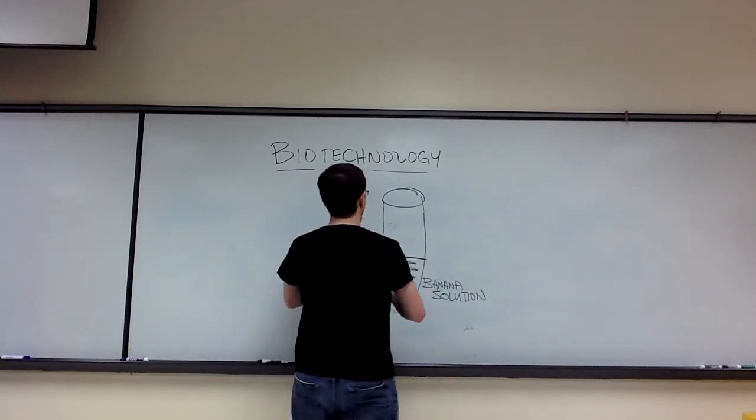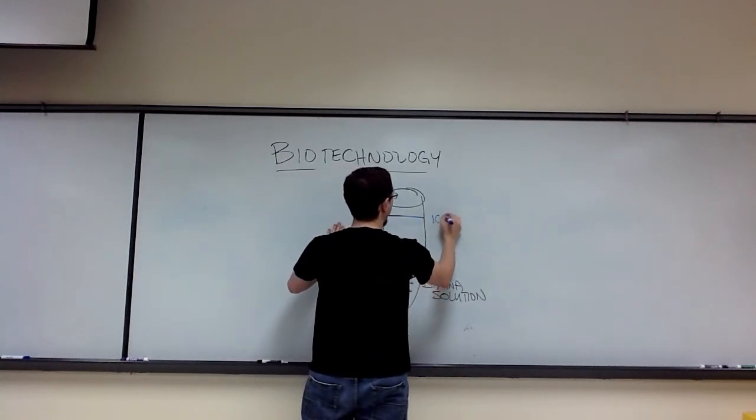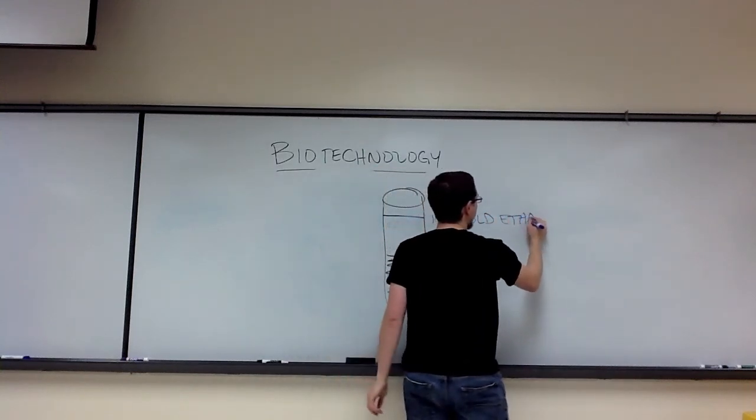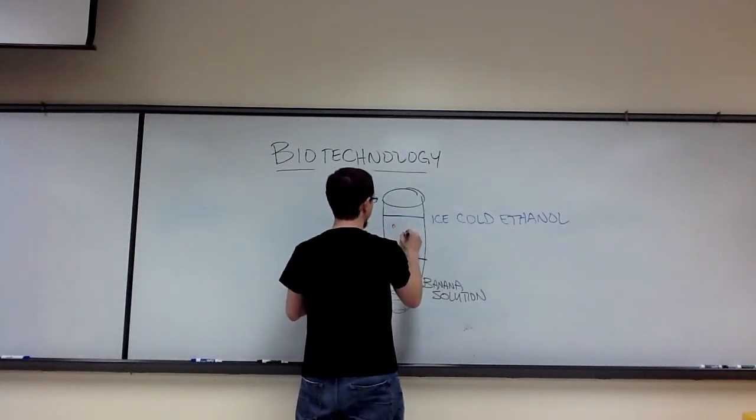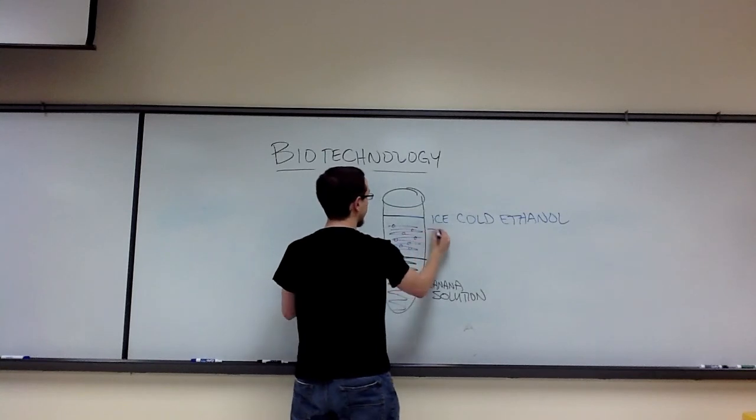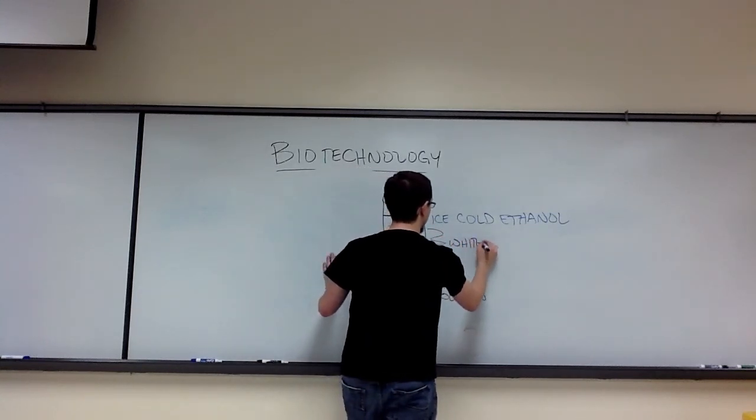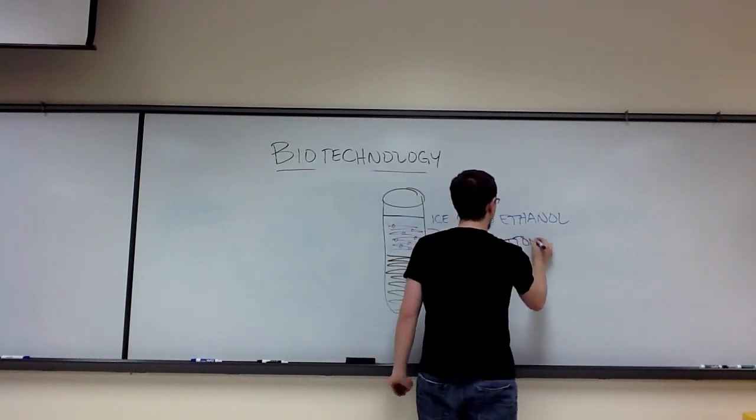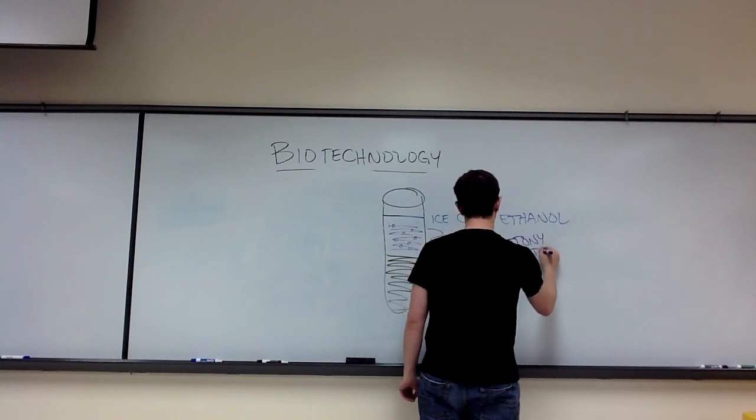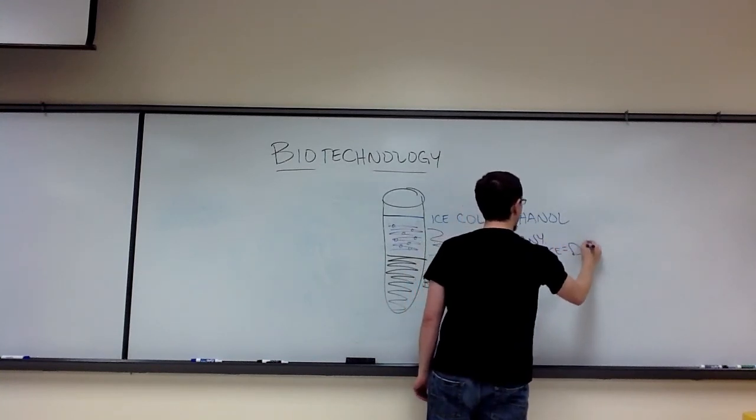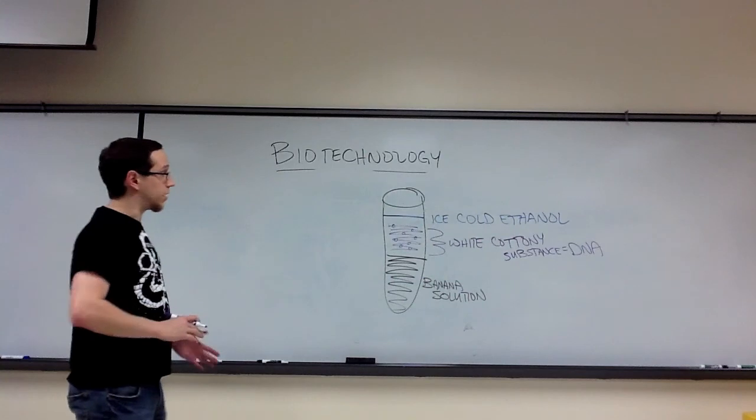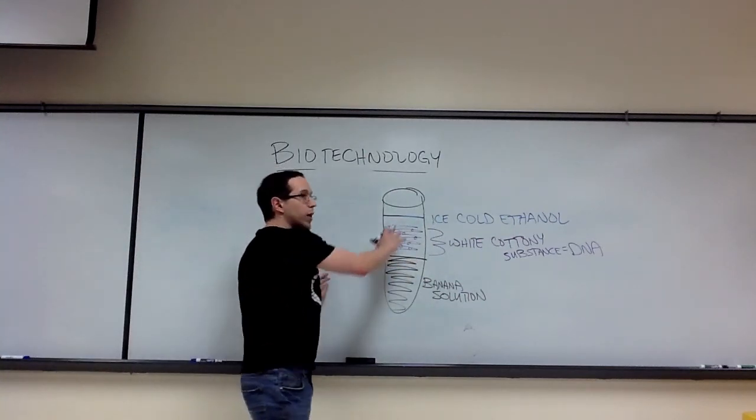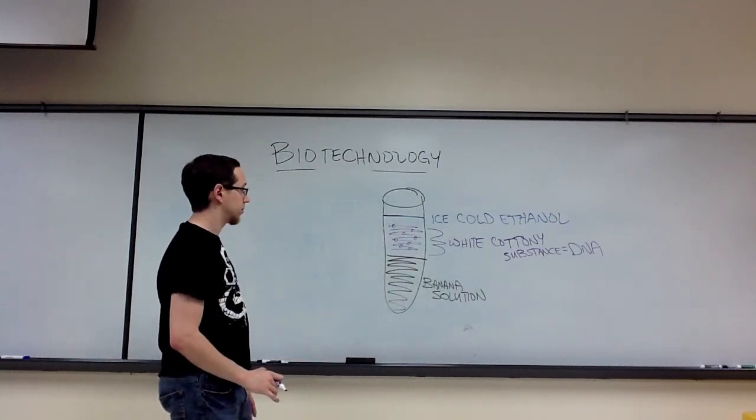We're going to add ice-cold ethanol. When we add that ice-cold ethanol, what we're going to see are bubbles. Within those bubbles, we're also going to see kind of a white, cloudy mist, or a white, cottony substance. That substance is the DNA. So DNA is insoluble in ethanol. And because it's insoluble in ethanol, when we add the ice-cold ethanol, we now can visualize the DNA.